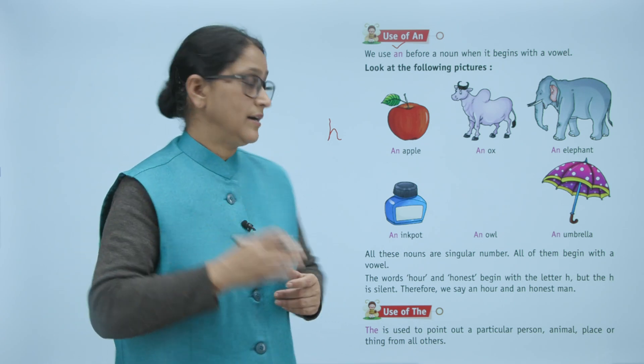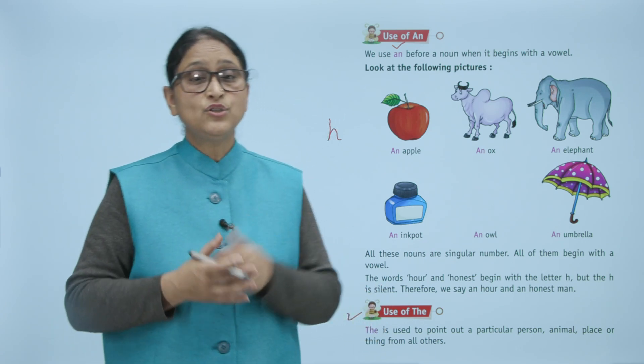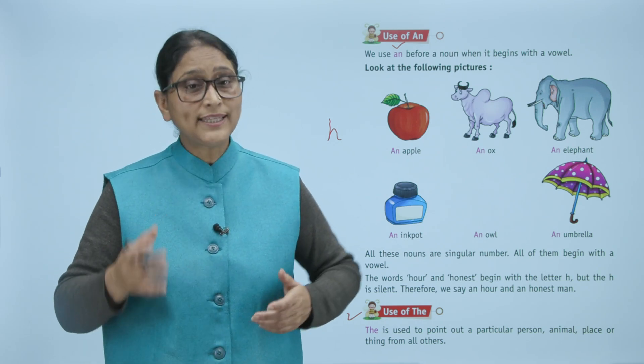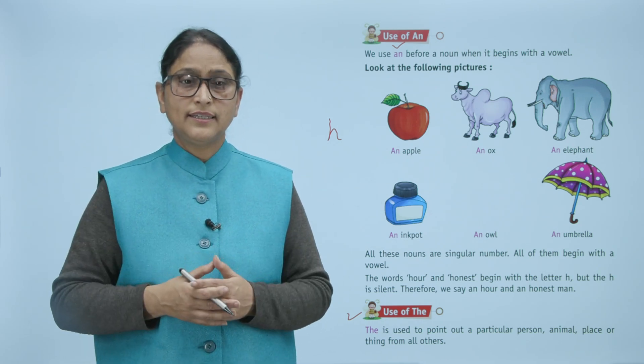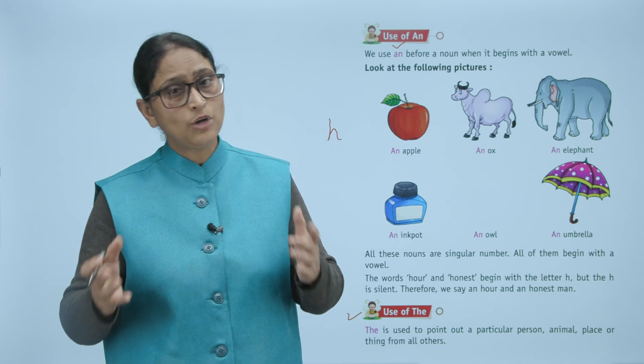Next is use of 'the'. 'The' is used to point out a particular person, animal, place, or thing from all others. 'The' hum kahan use karenge? Particular person, animal, or place ke sath mein.